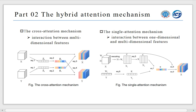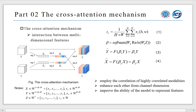The hybrid attention mechanism proposed by us contains two different attention mechanisms: the cross-attention for interaction between multidimensional features, and the single attention for interaction between one-dimensional and multidimensional features. The cross-attention mechanism is achieved by equation 1 to equation 4.